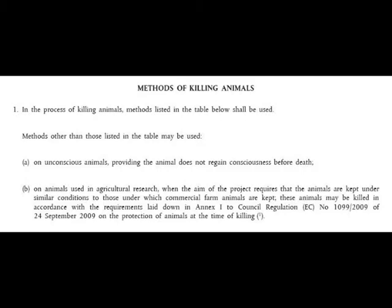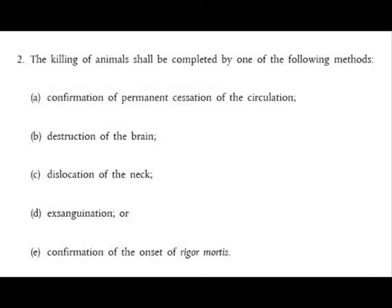In part two of Article 6, to do with the killing of animals, it reads: the killing of animals shall be completed by one of the following methods — A: confirmation of permanent cessation of circulation, which one imagines means the heart has stopped; B: destruction of the brain; C: dislocation of the neck; D: exsanguination; or E: confirmation of the onset of rigor mortis.